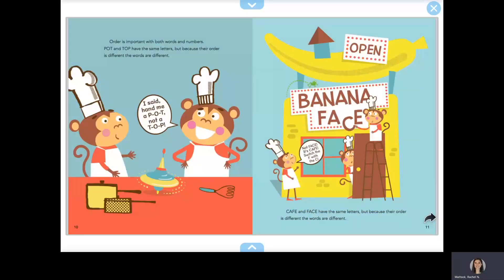Order is important with both words and numbers. Pot and top have the same letters, but because their order is different, the words are different. Cafe and face have the same letters, but because their order is different, the words are different.